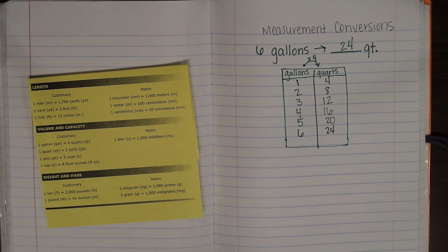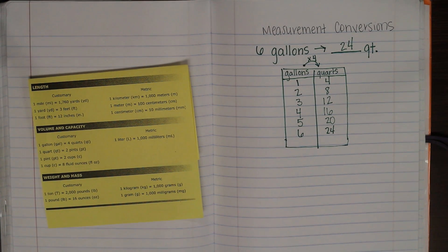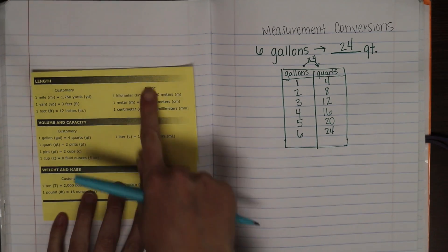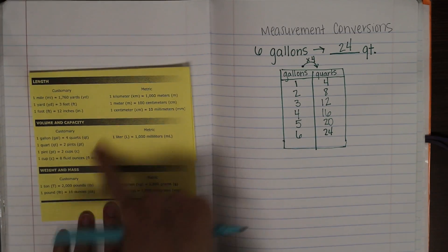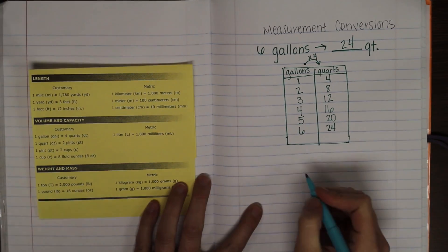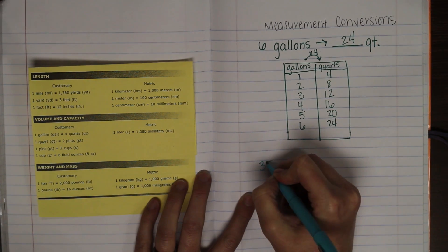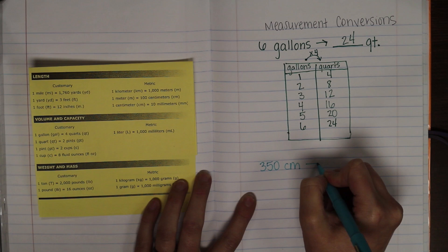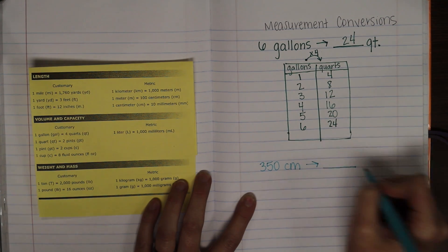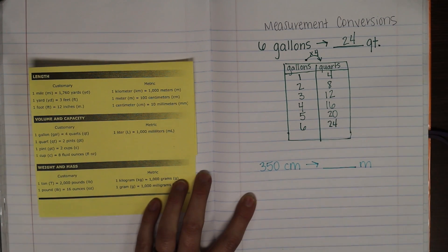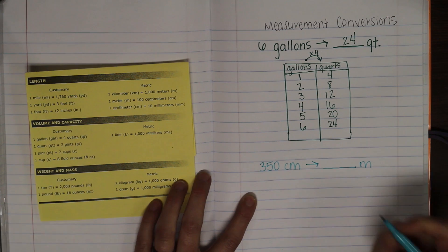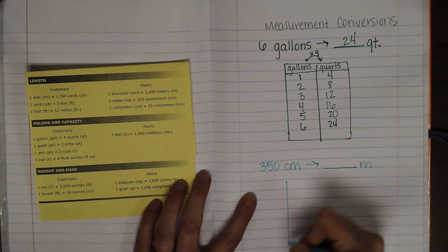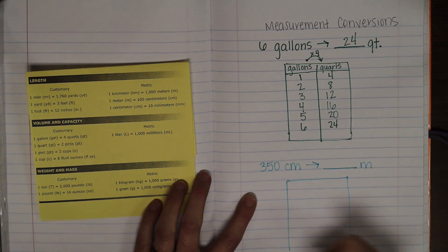Okay, looking at another example, we're now going to look at the metric system. Notice you have customary and metric. So, for our metric example, we're going to do three hundred and fifty centimeters. And we're going to change that to meters. Okay. So, again, we're going to set up a table.